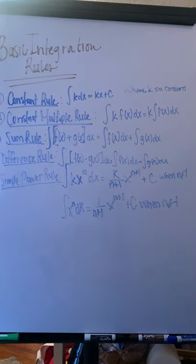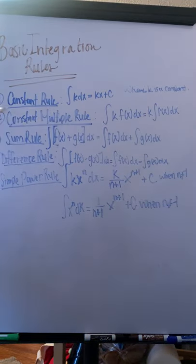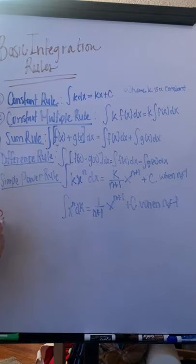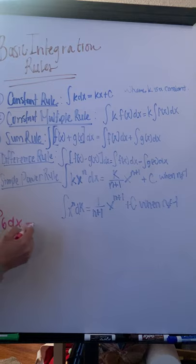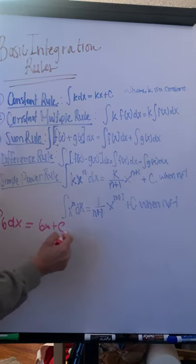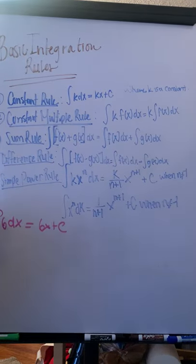The constant rule, which you discovered yesterday, is that the integral of a constant is the constant times x. So the integral of 6 dx equals 6x plus c. That's the constant rule.